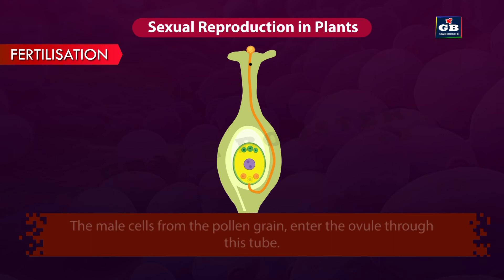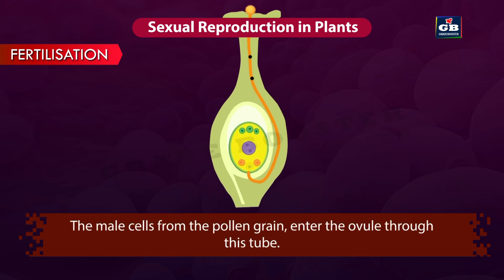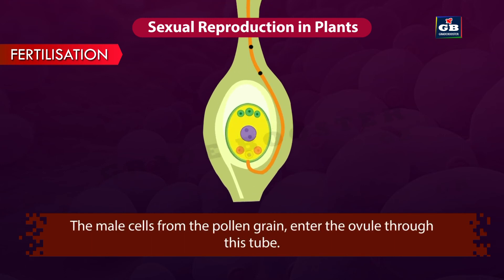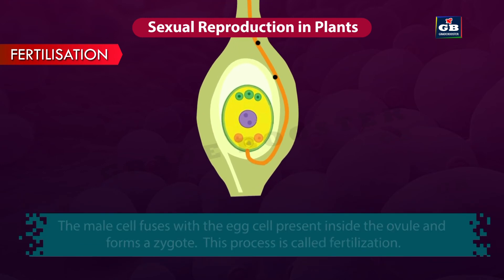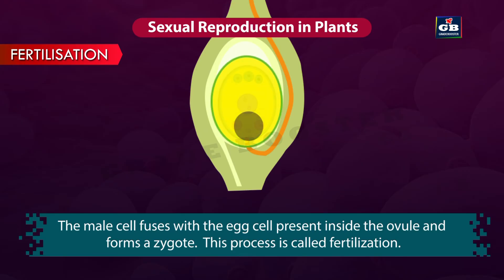The male cells from the pollen grain enter the ovule through this tube. The male cell fuses with the egg cell present inside the ovule and forms a zygote. This process is called fertilization.